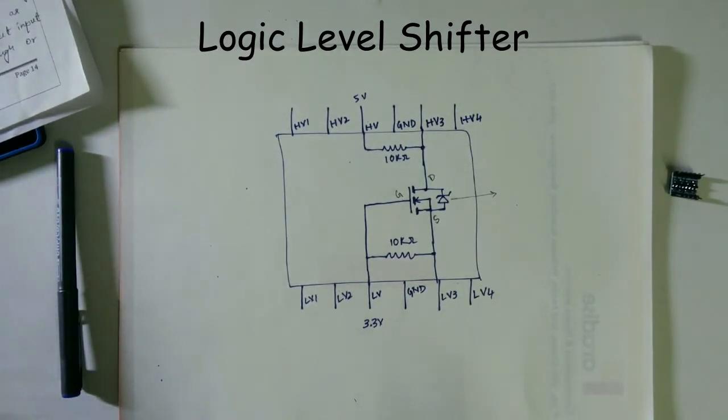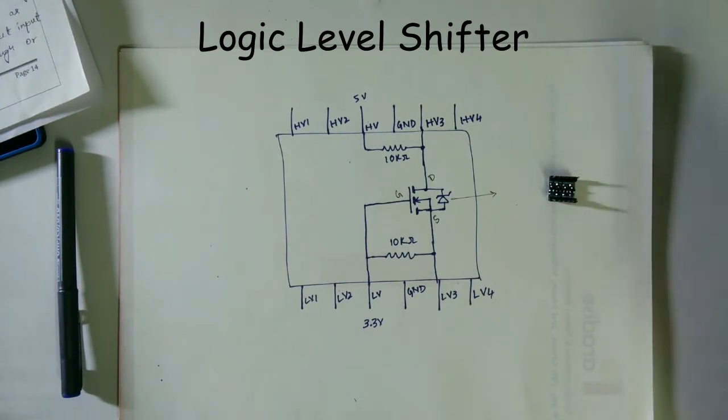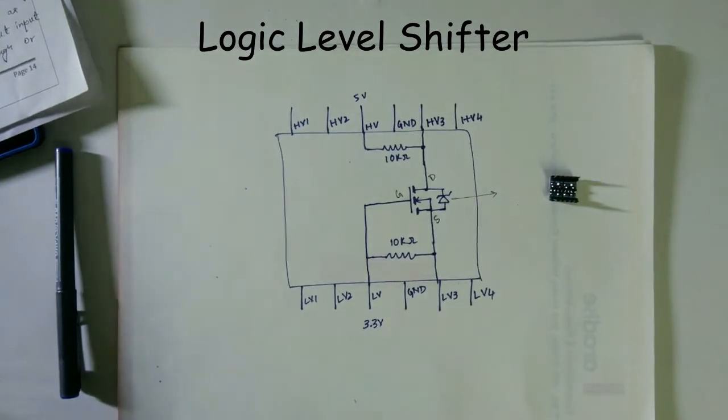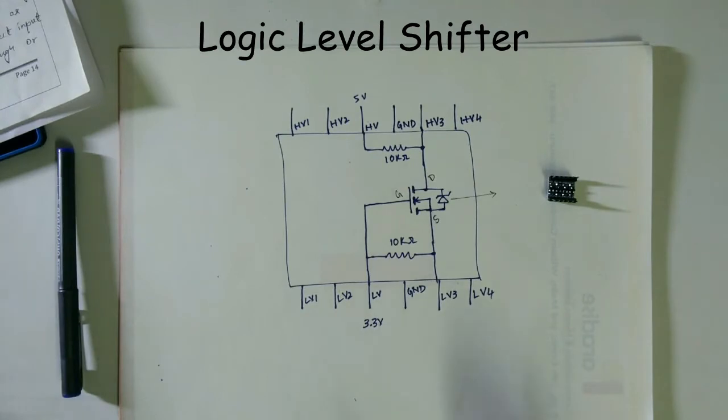Shifters which convert low to high or high to low in one direction are called unidirectional level shifters. What I have here is a bidirectional logic level shifter, which means it can shift both high to low as well as low voltage to high voltage.